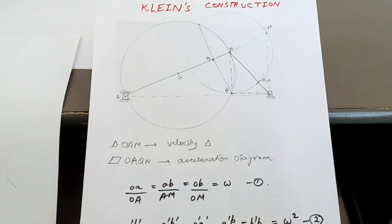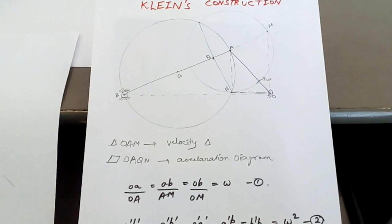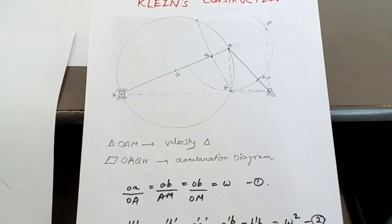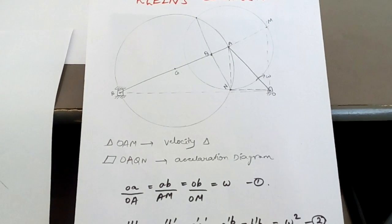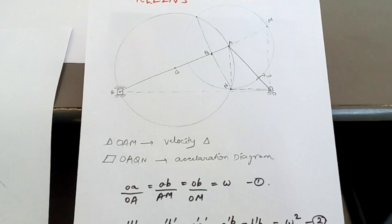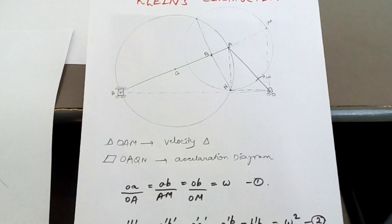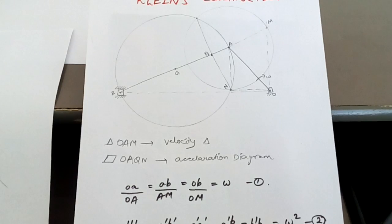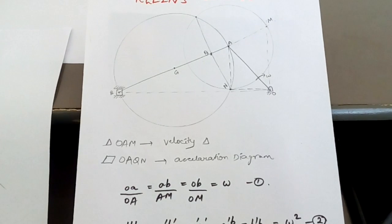Now starting with the video. This is the Klien's construction. Remember, this method is applicable only for the slider crank mechanism.